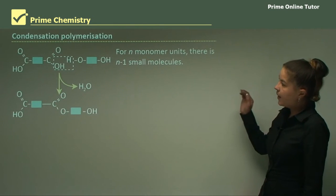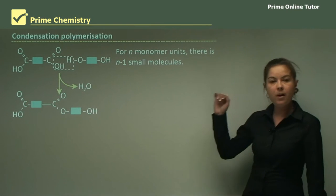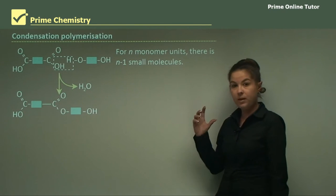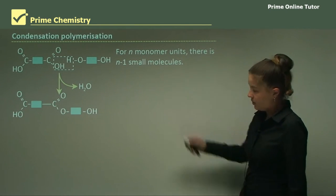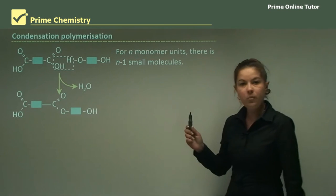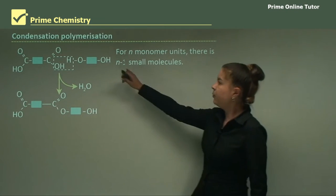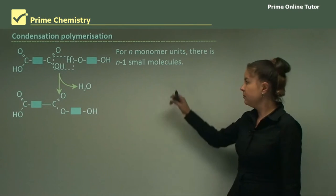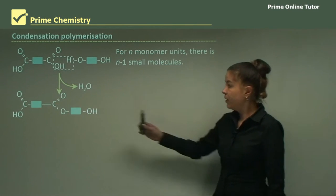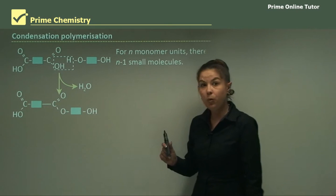For n monomer units there will be n-1 small molecules given off. So if we have a look at this structure here, if we had two monomer groups coming together you would have 2-1 equals 1 small molecule coming off. And in this instance it's water.